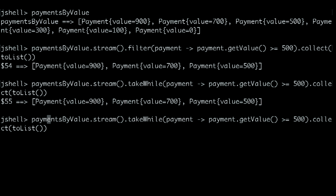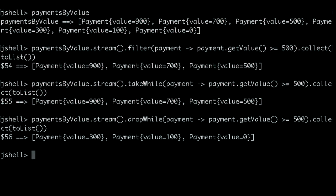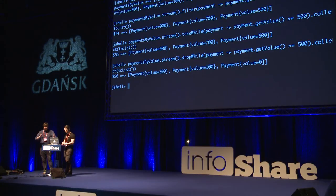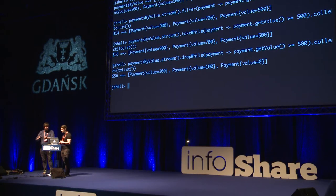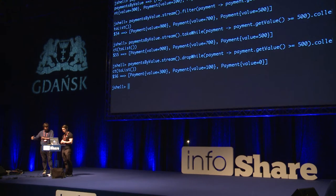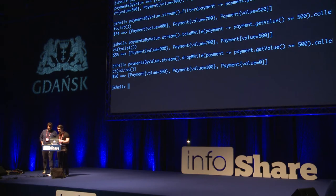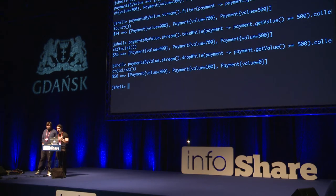There is also the sister of takeWhile called dropWhile, which was also added. It drops while the predicate holds true, and once it goes false it keeps everything after that point. Useful method to have around. But keep in mind that if you're using parallel streams, takeWhile and dropWhile have additional overhead because they need to keep track of different partitions, the order, and coordinate their work — so they could be more expensive with parallel streams.